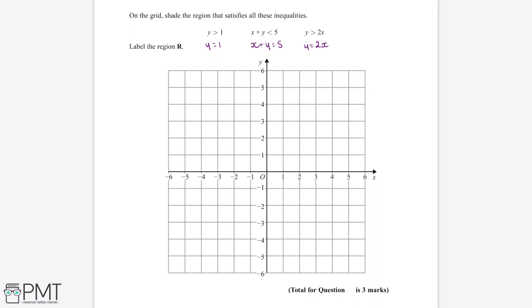So if we first start off with y equals 1, the line where y will always be equal to 1 will look like this.